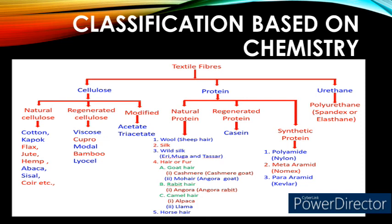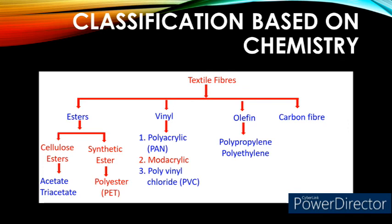The example for urethane-based textile fiber is polyurethane, commercially called spandex or elastane. The ester-based textile fibers are further classified into cellulosic esters and synthetic esters. The examples for cellulosic esters are acetate and triacetate. The example for synthetic ester is polyester fiber. The examples for vinyl-based textile fibers are polyacrylonitrile (commercially called acrylic), modacrylic, and polyvinyl chloride. The examples for olefin-based textile fibers are polypropylene and polyethylene, and finally the carbon-based textile fibers.